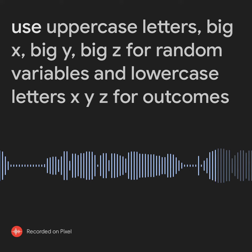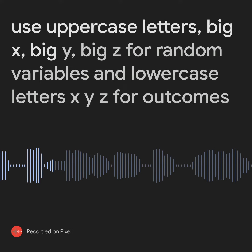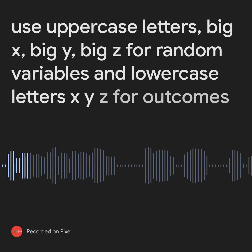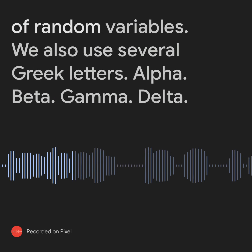We use uppercase letters — big X, big Y, big Z — for random variables, and lowercase letters x, y, z for outcomes of random variables.